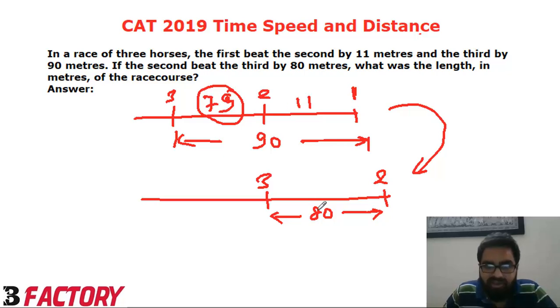So to get a lead of additional one meter, B has to travel how much? He has to travel this distance which is 11. So for lead of one meter, B travels 11 meters.